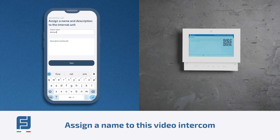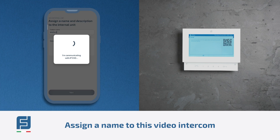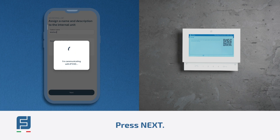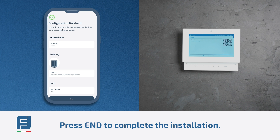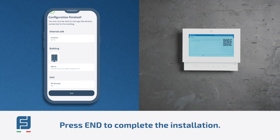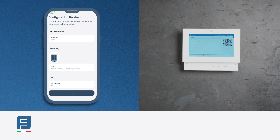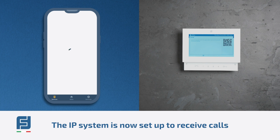Assign a name to this video intercom and press next. Press end to complete the installation. The IP system is now set up to receive calls.